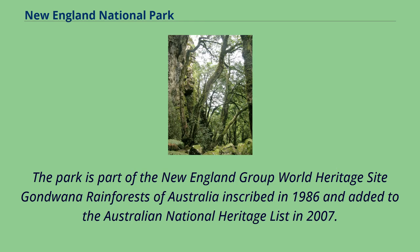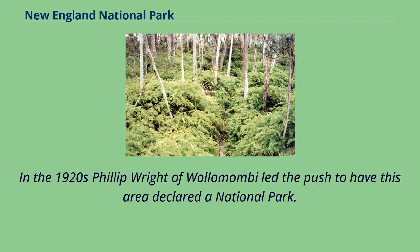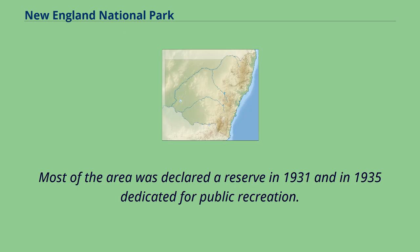The park is part of the New England Group World Heritage Site, Gondwana Rainforests of Australia, inscribed in 1986 and added to the Australian National Heritage List in 2007. More than 1,000 plant species are found within the park, attracting prolific bird life. In the 1920s, Philip Wright of Wollumambi led the push to have this area declared a national park. Most of the area was declared a reserve in 1931 and in 1935 dedicated for public recreation.